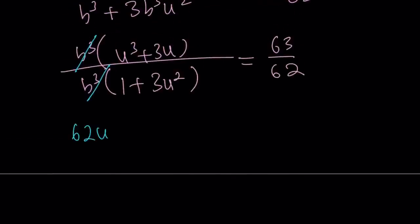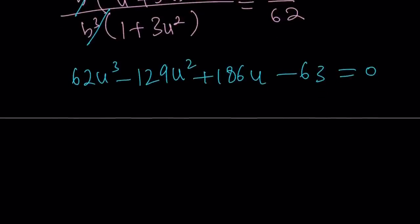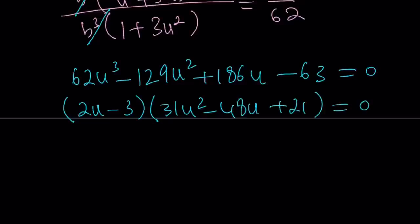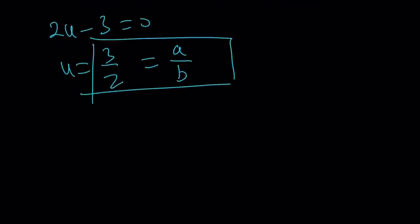After cross-multiplication, we get 62u cubed minus — and here is the cubic equation. To solve this cubic, you can use the rational root theorem or Tartaglia's formula (the cubic formula). The solutions include one rational solution, which is 3 halves. So we can factor out (2u minus 3) times (31u squared minus 48u plus 21) equals 0. The quadratic factor gives no real solutions, so we focus on 2u minus 3 equals 0, giving u equals 3 halves. And since u equals a over b, we get a over b equals 3 halves.